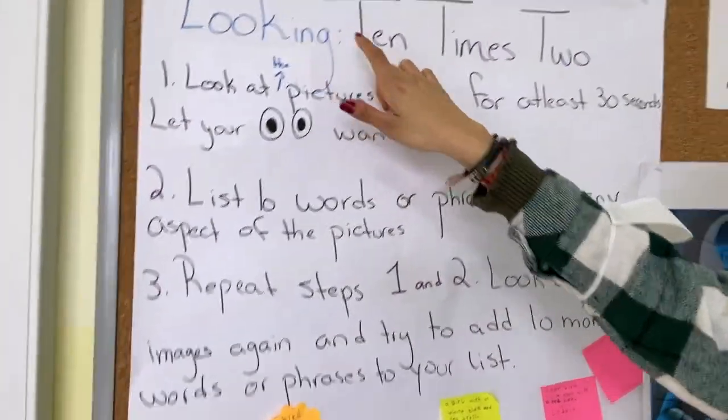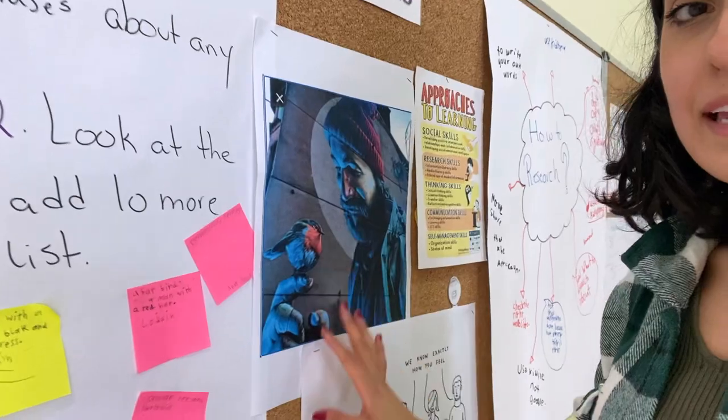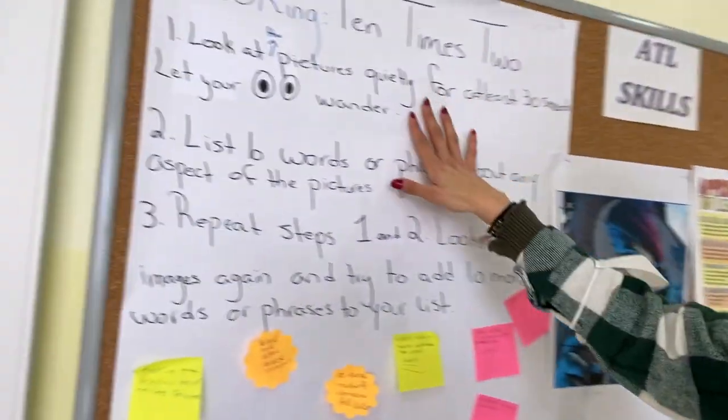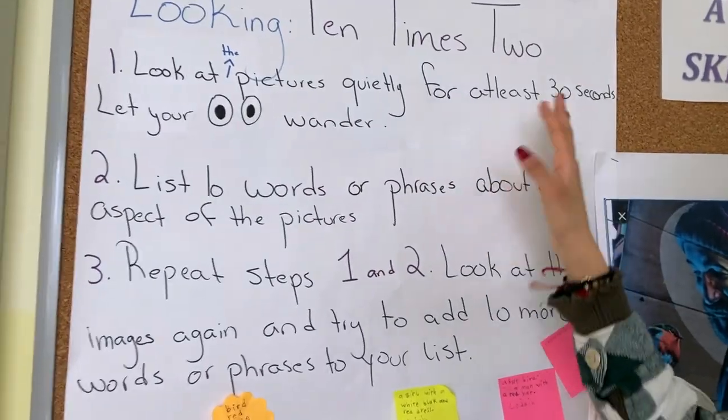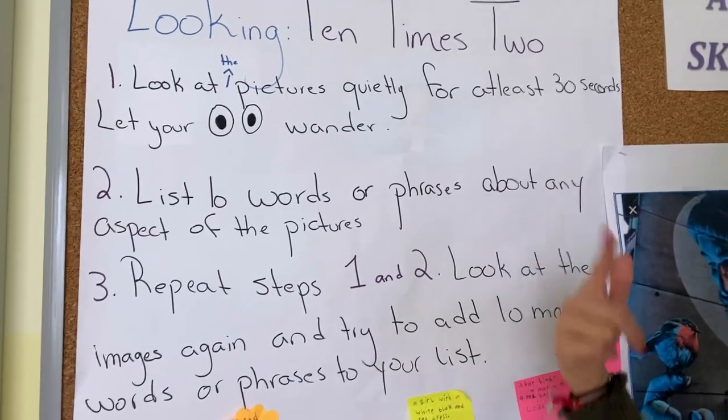They also did another thinking routine called 'Looking 10 times 2.' They had to observe pictures and drawings that contain hidden messages. The purpose was to observe the pictures and find the message behind them without reading any words. They looked at the pictures quietly for at least 30 seconds, listed 10 words or phrases about any aspect, then repeated the process — ending up with 20 to 30 words or phrases.